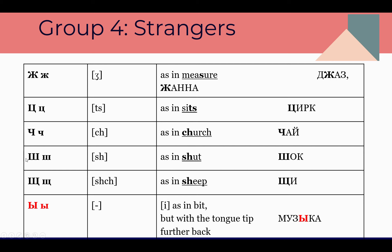The next letter is Ш — sounds 'Sh,' as in 'shut.' The Russian word: Ш, О, К — Шок — I think you know the English meaning: shock. Let's move to Щ — sounds like a longer 'sh,' as in 'sheep.' The Russian word: Щи — a traditional Russian dish, soup made from cabbage.